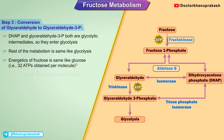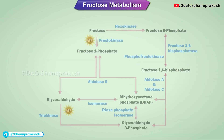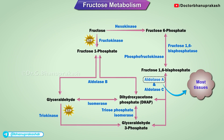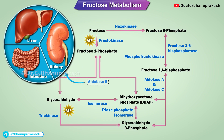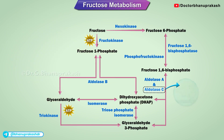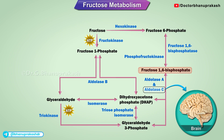Fructose yields 32 ATPs per molecule. Aldolase A is located in most tissues and catalyzes the cleavage of fructose-1,6-bisphosphate into DHAP and glyceraldehyde-3-phosphate. Aldolase B is located in the liver, kidneys, and small intestine, and catalyzes the cleavage of fructose-1-phosphate into DHAP and glyceraldehyde. Aldolase C is located in the brain and catalyzes the cleavage of fructose-1,6-bisphosphate into DHAP and glyceraldehyde-3-phosphate.